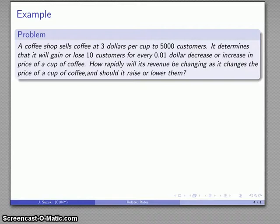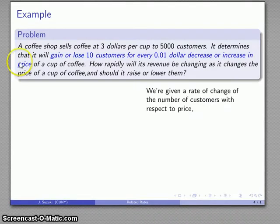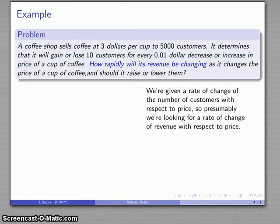And again some of the important pieces of analysis here. We are given a rate of change—gain or lose the number of customers per dollar. So this is a rate of change in terms of customers with respect to dollars. Price is probably what we would interpret that to measure, so this is a rate of change of customers with respect to price. So presumably when we try to answer this question how rapidly is revenue changing, we are also looking for a rate of change of revenue also with respect to price.